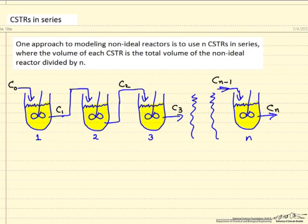One method to model non-ideal reactors is to use a number of CSTRs in series, n being the number that we can vary to best fit the non-ideal reactor, and the volume of each CSTR is just the total volume of the non-ideal reactor divided by n.